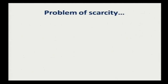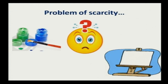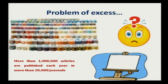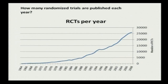Initially there was a problem of scarcity — there was hardly any literature available on most medical topics and we didn't know where to start. But now there's a problem of excess: more than 10 lakh articles are published in more than 20,000 journals each year, and it has left us confused about what should be the best evidence to use.